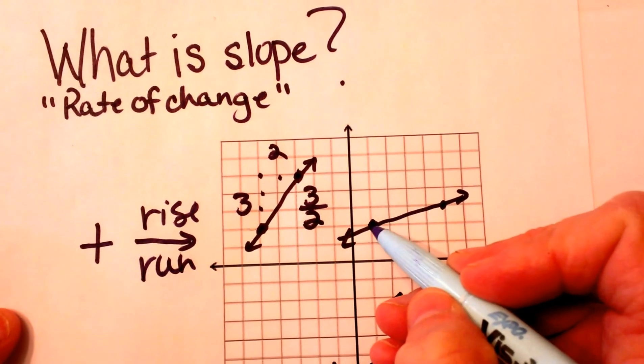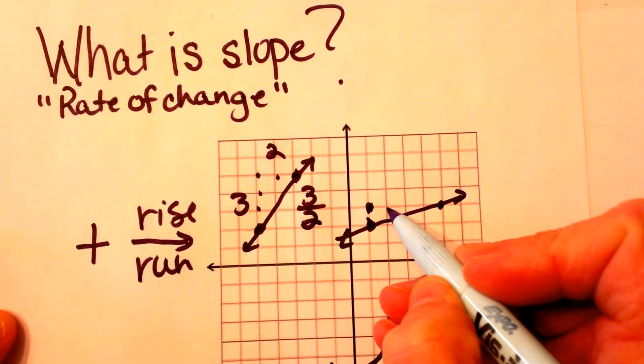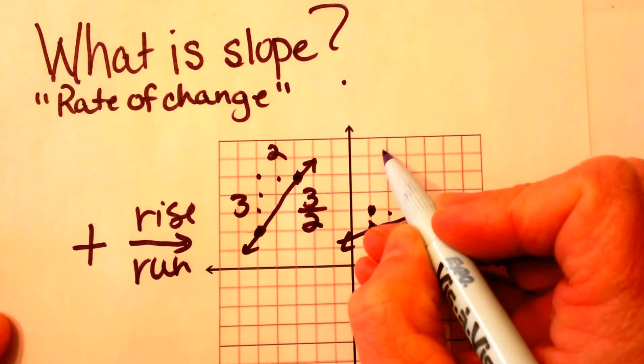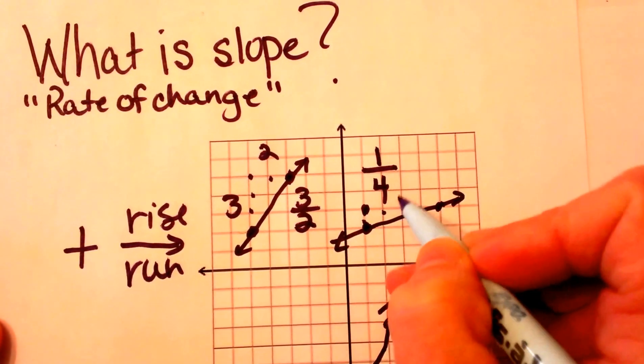Let's look at the second example here. This one we're going to rise 1 unit and we're going to go over 1,2,3,4 units. So the rise is 1 and the run is 4, so that would be 1 fourth slope.